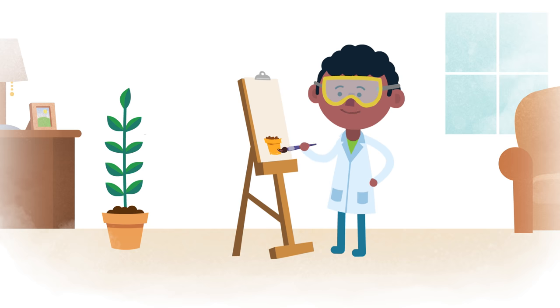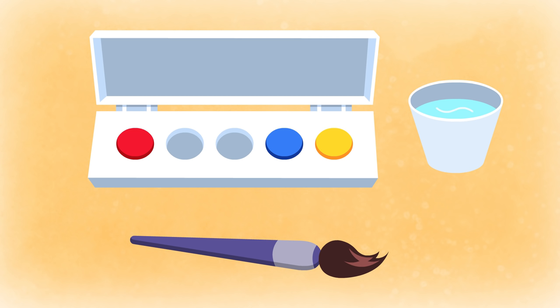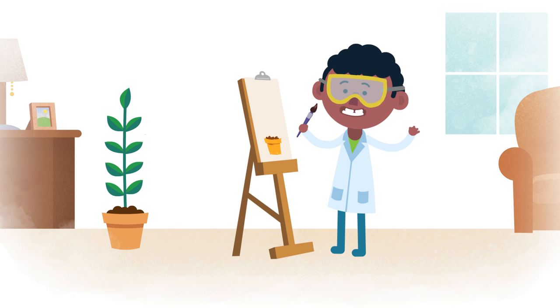Let's paint a picture of the plant to remember what we discovered. I don't have green paint for the plant, only red, yellow, and blue. What do you think will happen if I mix some colors? Red and yellow make orange.